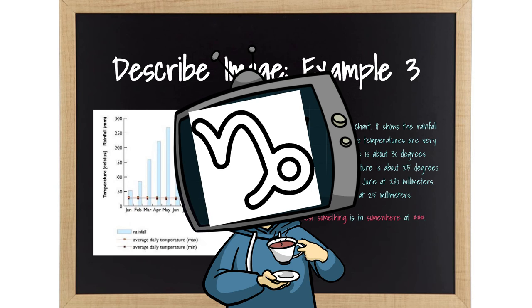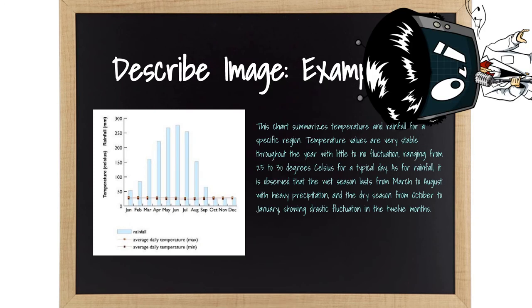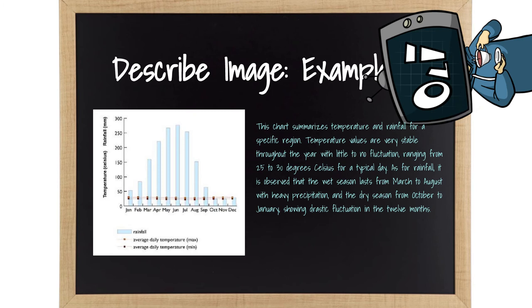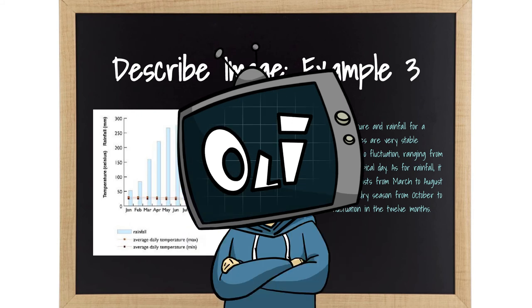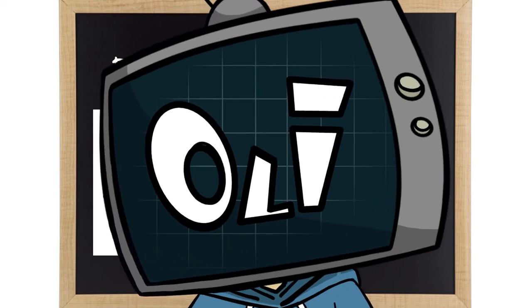Here is the over-the-top version because I am a typical Capricorn. Fancy and elegant. This chart summarizes temperature and rainfall for a specific region. Temperature values are very stable throughout the year with little to no fluctuation, ranging from 25 to 30 degrees Celsius for a typical day. As for rainfall, it is observed that the wet season lasts from March to August with heavy precipitation, and the dry season from October to January, showing drastic fluctuation in the 12 months. Chose to include some numbers for temperature, chose to drop the ones for rainfall. Do it your own way if you disagree with my choices. See if I care. Also, I dare you to make up a conclusion. Go ahead. Try me.